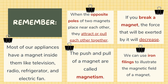If you break a magnet, the force that will be exerted by it will decrease. Most of our appliances have a magnet inside them, like television, radio, refrigerator, and electric fan. The push and pull of a magnet are called magnetism. We can use iron filings to illustrate the magnetic field of a magnet.